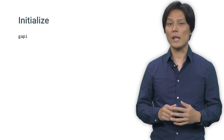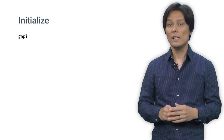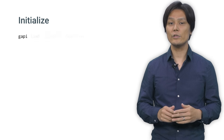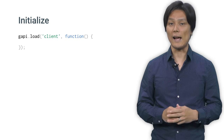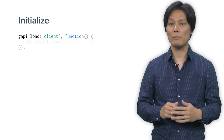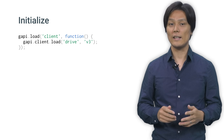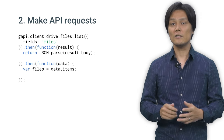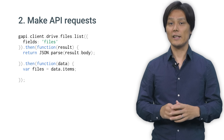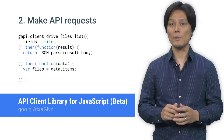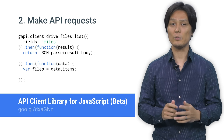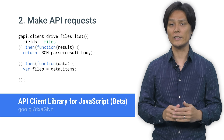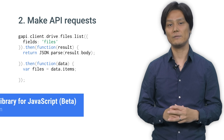To send requests to the Google APIs, you can use GAPI. For example, if you want to use the Google Drive API, add the client module, then the drive module with the API version. Using client libraries is simple. In this case, I'm grabbing the list of files and folders in the user's root directory.